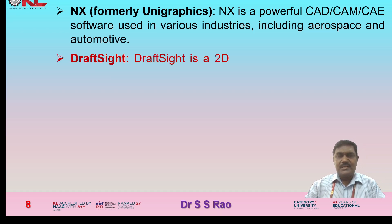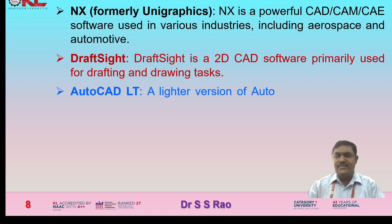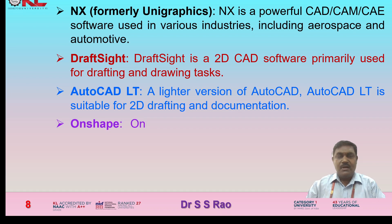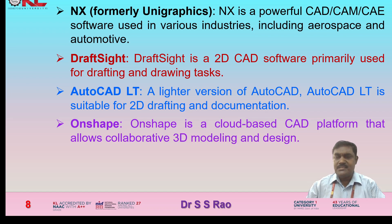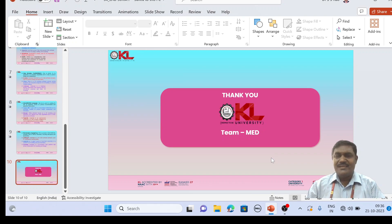DraftSight is a 2D CAD software primarily used for drafting and drawing tasks. AutoCAD LT is a lighter version of AutoCAD, suitable for 2D drafting and documentation. Onshape is a cloud-based CAD platform that allows collaborative 3D modeling and design. These are the different CAD softwares covered in this video. Thank you.